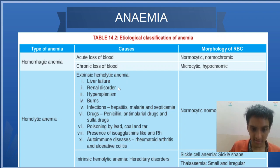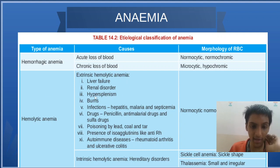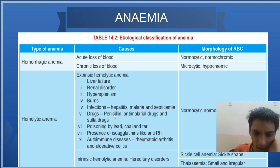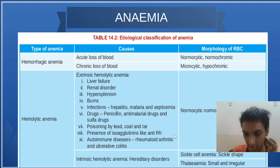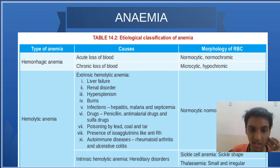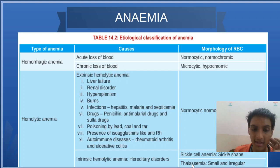Then hemolytic anemia — causes include liver failure, renal disorder, hypersplenism, burns, infections (remember hepatitis), drugs (remember penicillin), lead poisoning, blood incompatibility, and autoimmune disorders. Along with intrinsic or hereditary disorders — examples are sickle cell anemia, G6PD deficiency, and thalassemia. The morphology here is the same as in acute hemorrhagic anemia — normocytic normochromic.